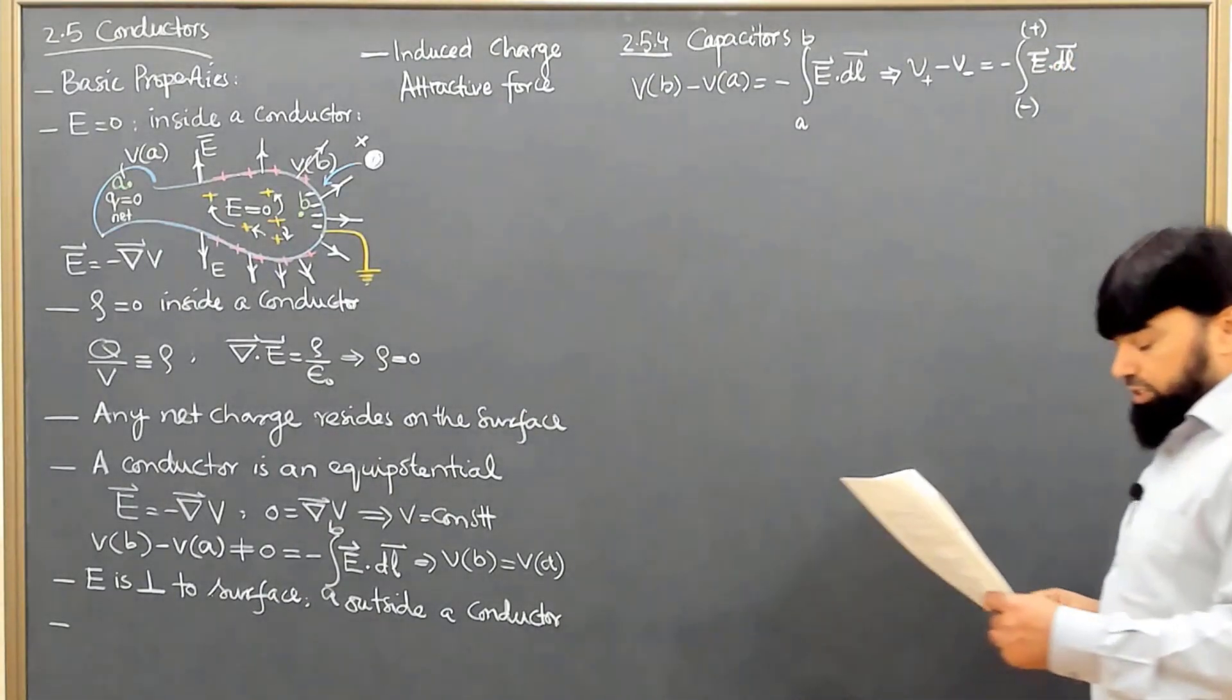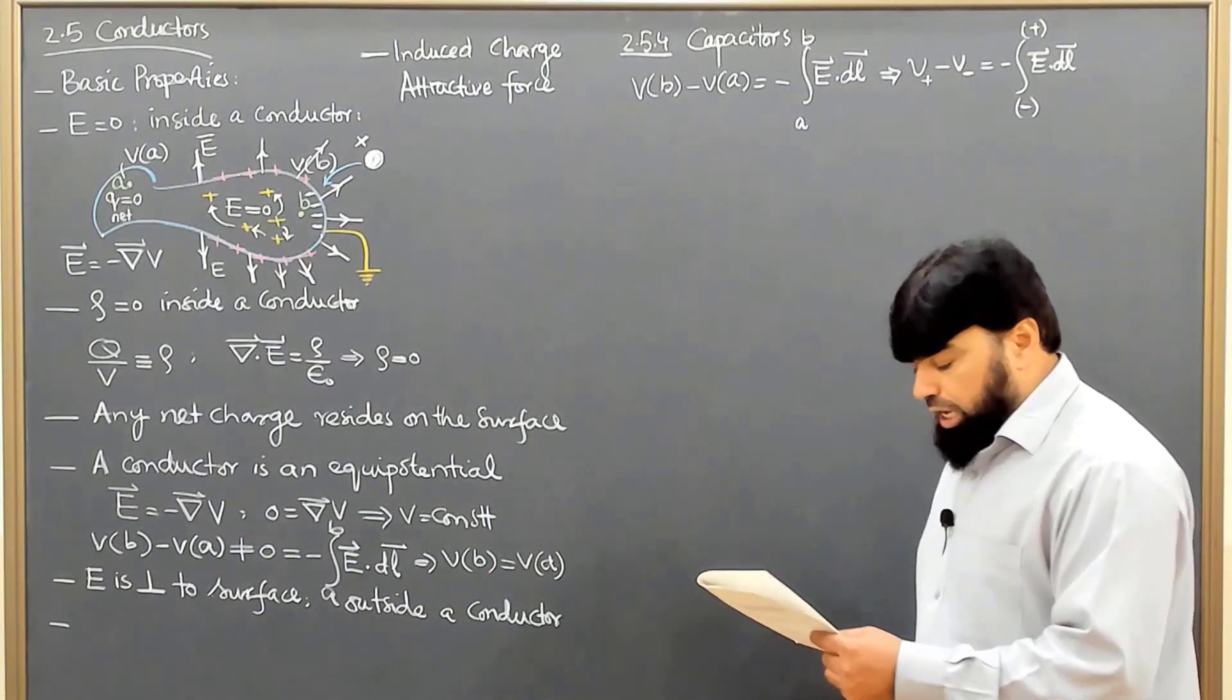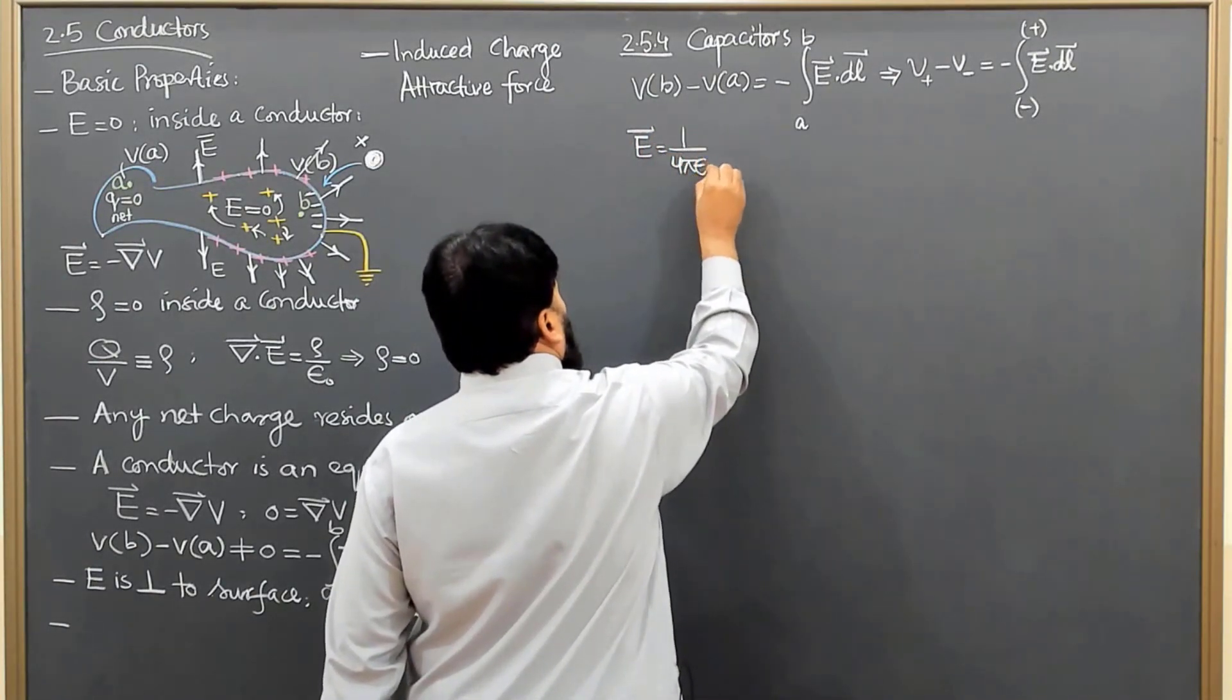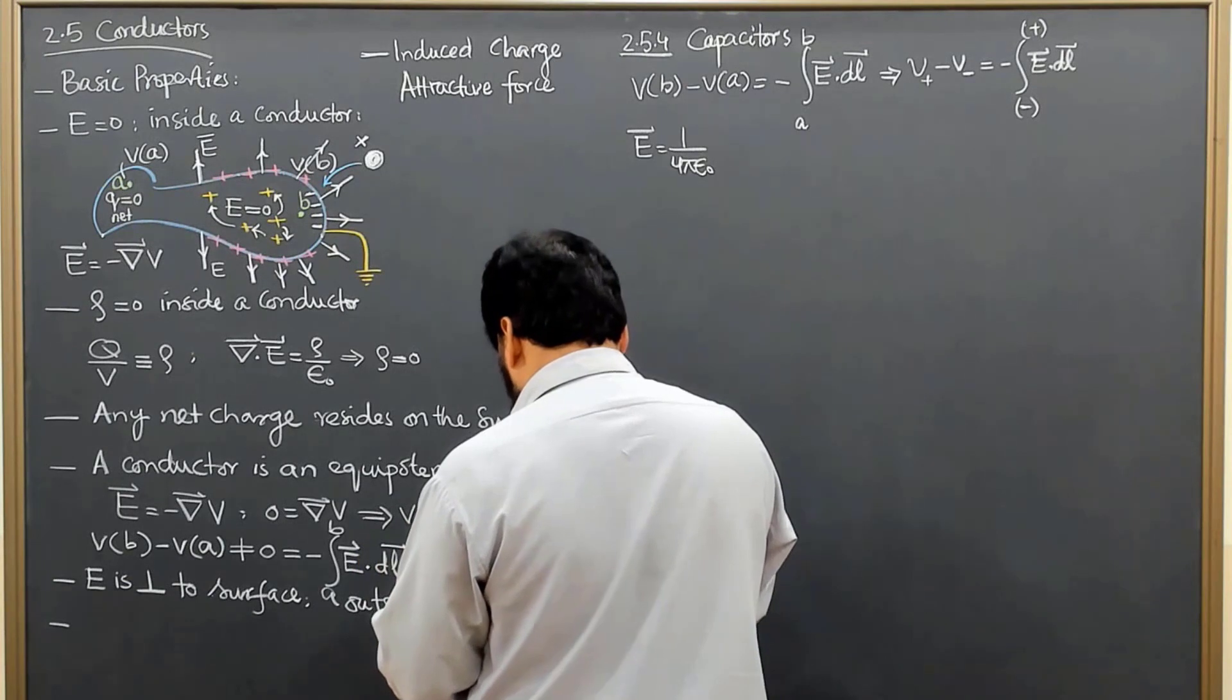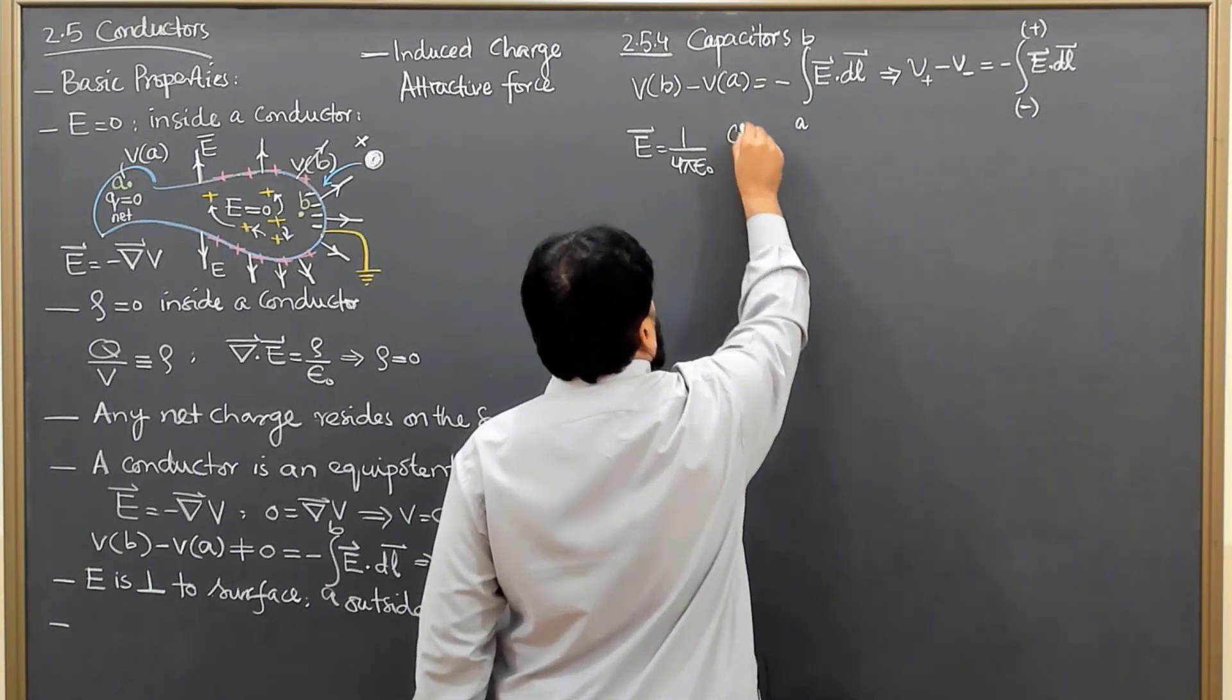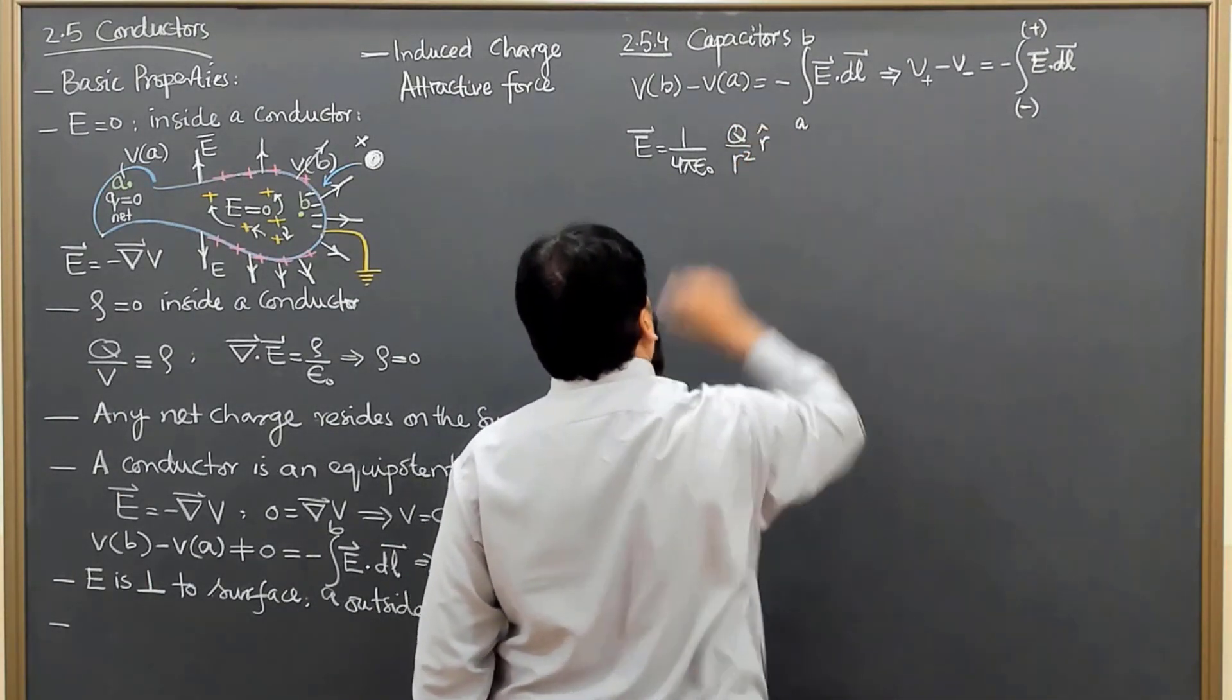For a capacitor, I know about the electric field, and we know that E is proportional to Q. We know that the electric field equals 1 over 4π epsilon naught times Q divided by R squared. In terms of charge density, if we have plus Q and minus Q, this is Q over R squared in the R unit vector.